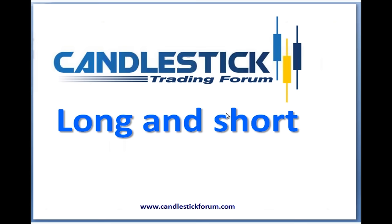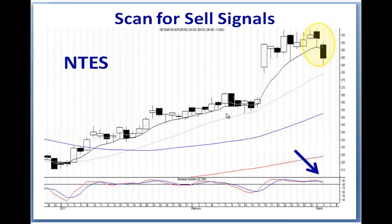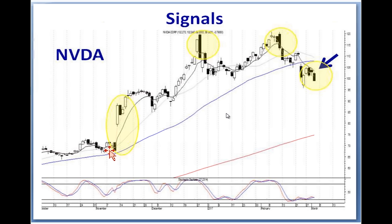Through the years Jeff and I have developed scans to look for bullish and bearish patterns. I'm going to show a couple I scanned tonight for sell signals. There's NTES — a hanging man gap down with stochastics in the overbought area. We can also scan for the kicker signal in Nvidia. If you observe the obvious: where did the uptrend end? At the bearish engulfing signal. It came back up again, and where did the uptrend end again? Another bearish engulfing signal.